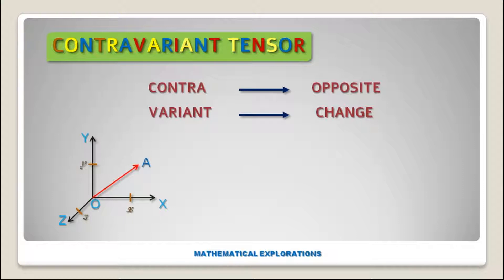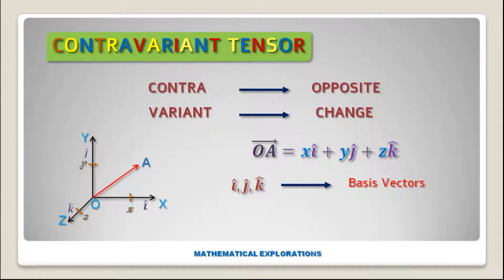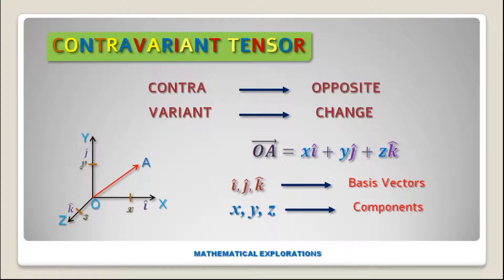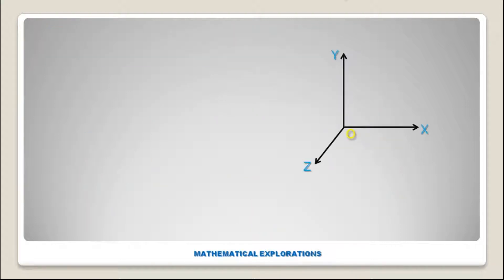Along the Z axis the basis vector is k-cap. Then the vector OA equals X·i-cap plus Y·j-cap plus Z·k-cap, which is the displacement vector or position vector from O to A. Here i-cap, j-cap, k-cap are the basis vectors and X, Y, Z are the components of the vector.